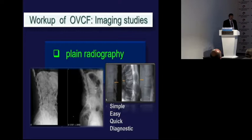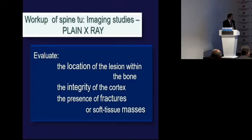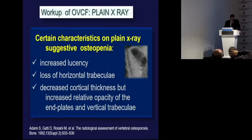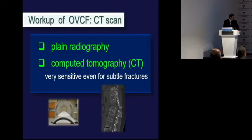We must also perform imaging studies. Plain radiography is simple, easy, quick, and diagnostic — allowing evaluation of location, integrity, and presence of fractures. Certain characteristics suggestive of osteopenia include increased lucency, loss of horizontal trabeculae, decreased cortical thickness, but increased relative opacity of the end plates. CT scan is very helpful and sensitive even for subtle fractures.